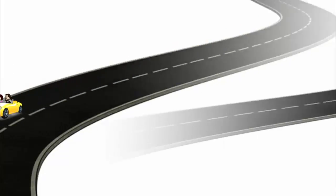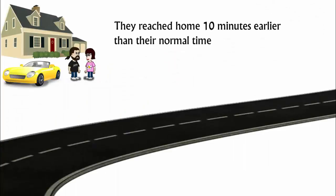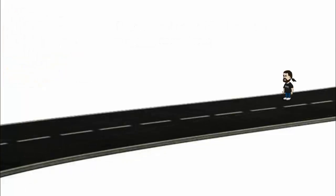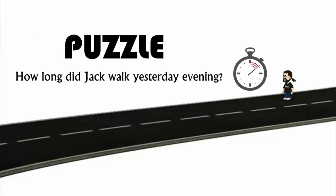In this whole journey, they reached home 10 minutes earlier than their normal time. If Jack's wife always drives the entire way between home and station at the same constant speed, how long did Jack walk yesterday evening?